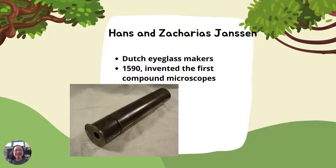Hans and Zacharias Janssen, Dutch eyeglass makers, invented the first compound microscope in the year 1590. It was a tube with two lenses at each end.